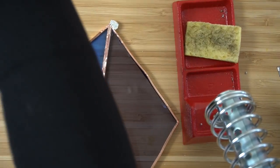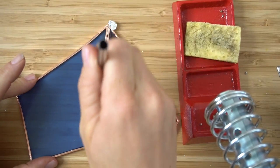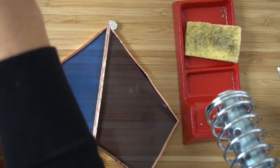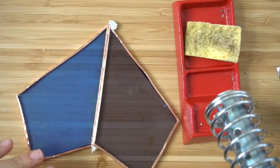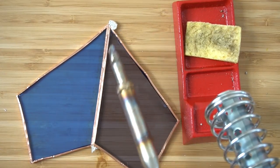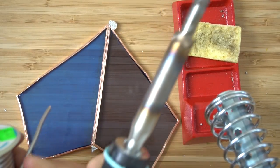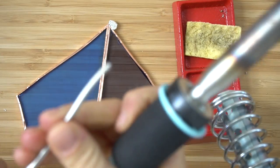You can grab flux and make sure you have enough there. That is what helps the solder to stick to the copper foil.